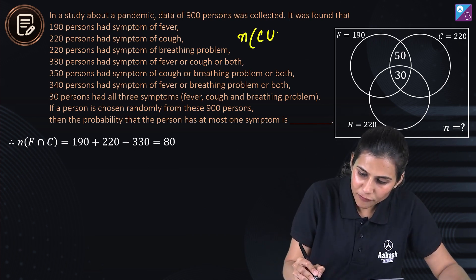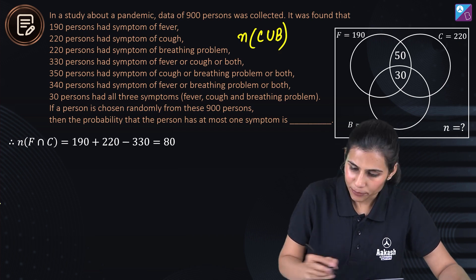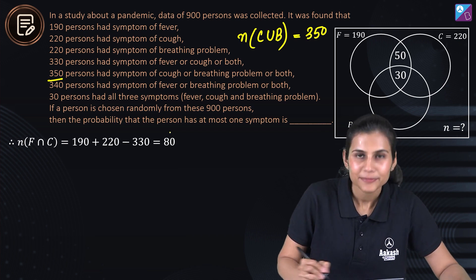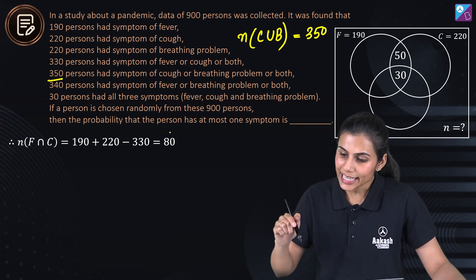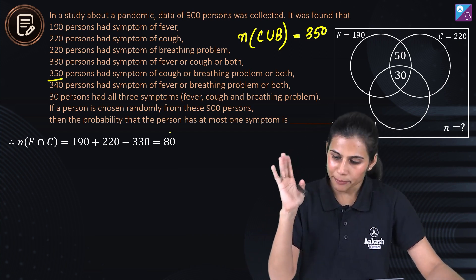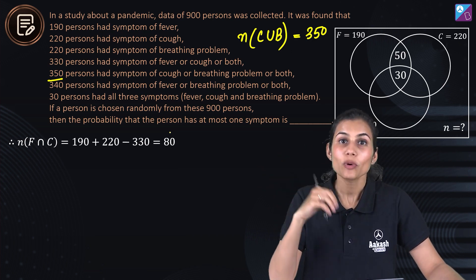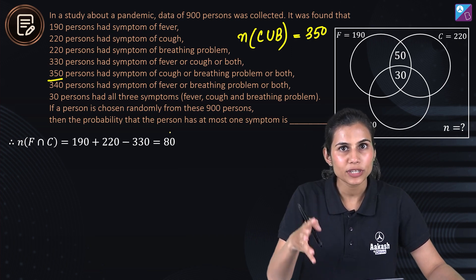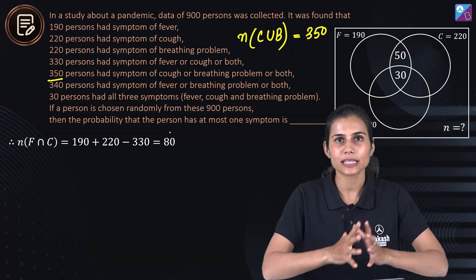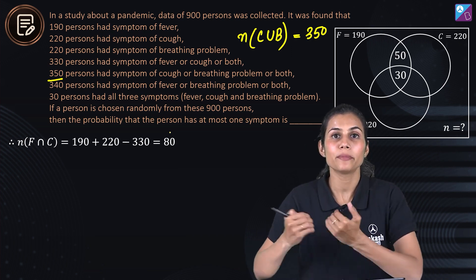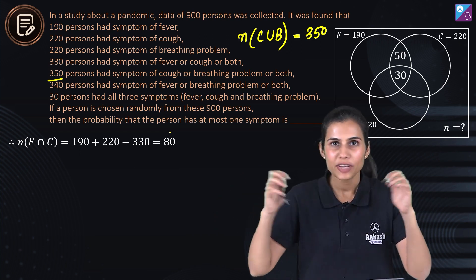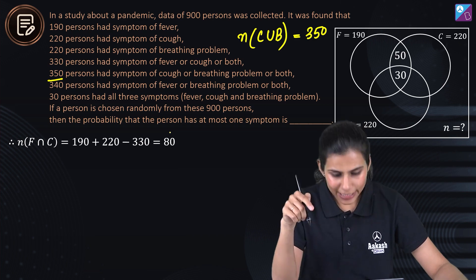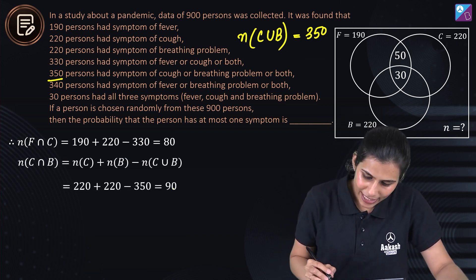I am given the number of members in C union B to be 350. Individually, C consists of 220 members and B consists of 220 members. Using the same formula: |C| + |B| − |C∩B| = 350, filling up the values, I get the number of members in C∩B to be 90.